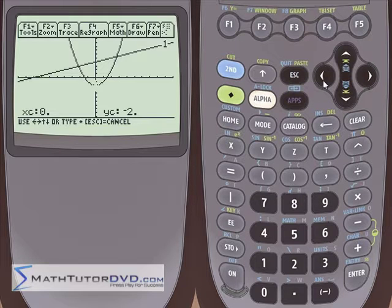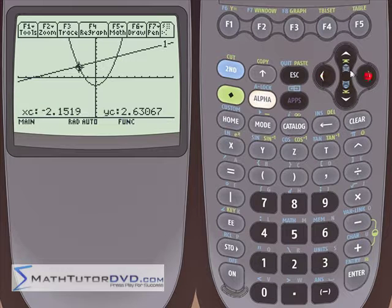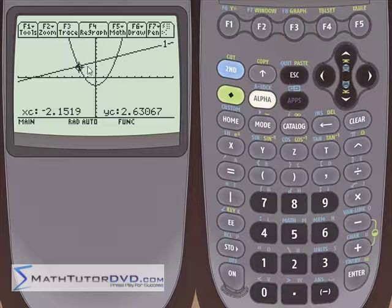Now, if we trace the graph, we can get pretty close to figuring out where these guys intersect. But it's not going to be exact. You see, it's going to kind of just hop around because of the way the pixels are lined up on the screen. It's not going to give you an exact solution.